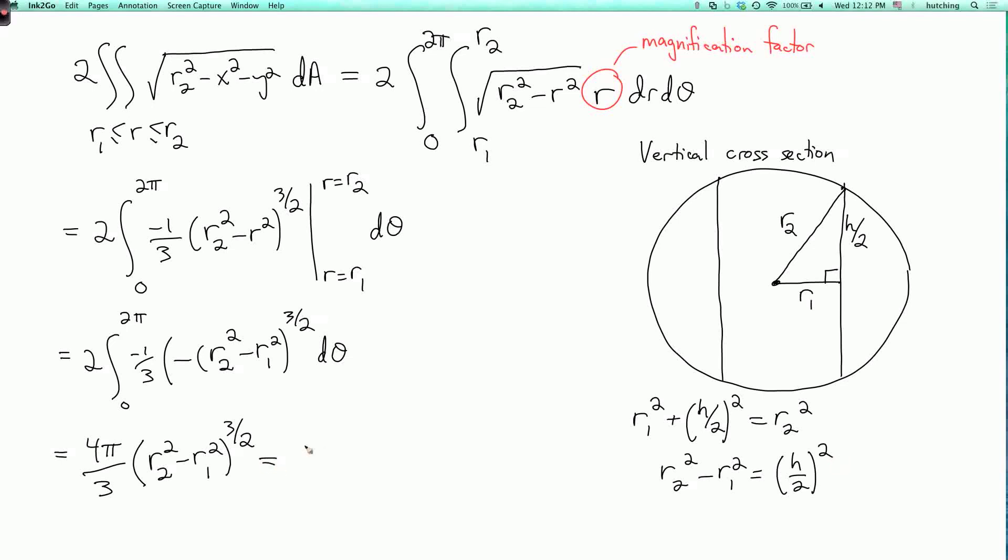Okay, so now I can put that in here. So this is 4 pi over 3 times h over 2 squared to the 3 halves. And that is just 4 pi over 3 times h over 2 cubed. So when I multiply this out, I'm going to get an h cubed, and then I'm going to have to divide by 8. So I get pi h cubed over 6, and that's the final answer.